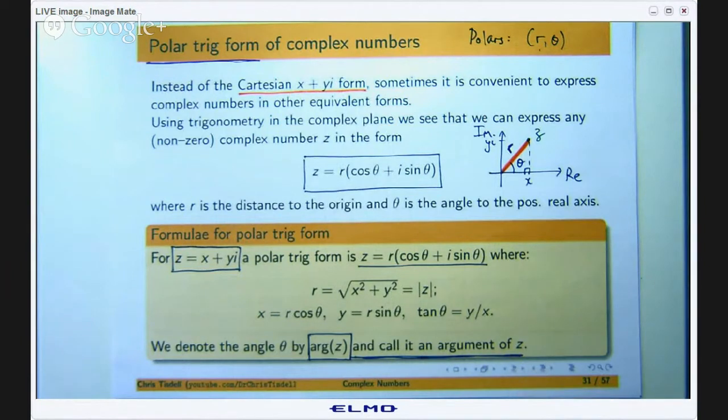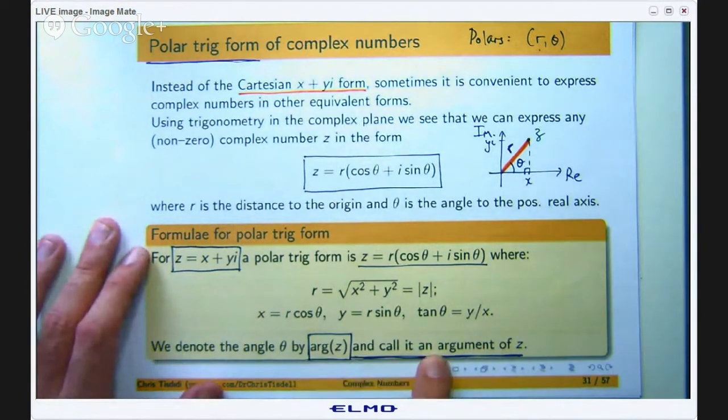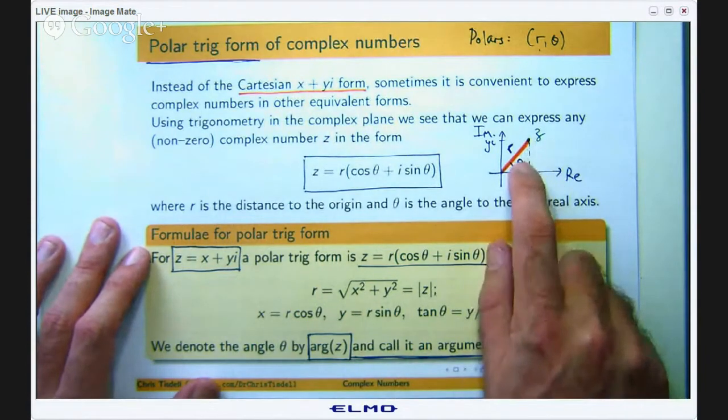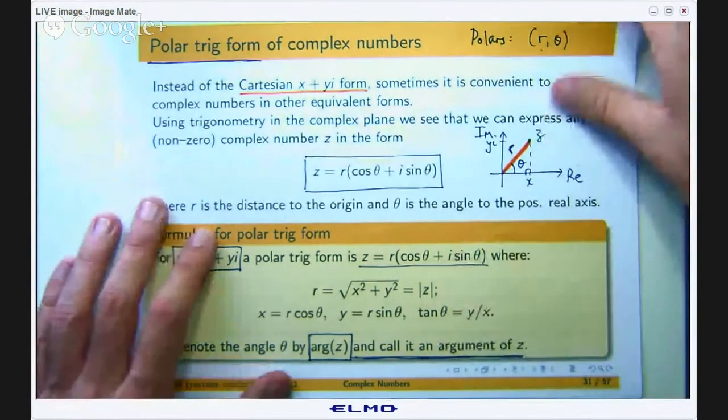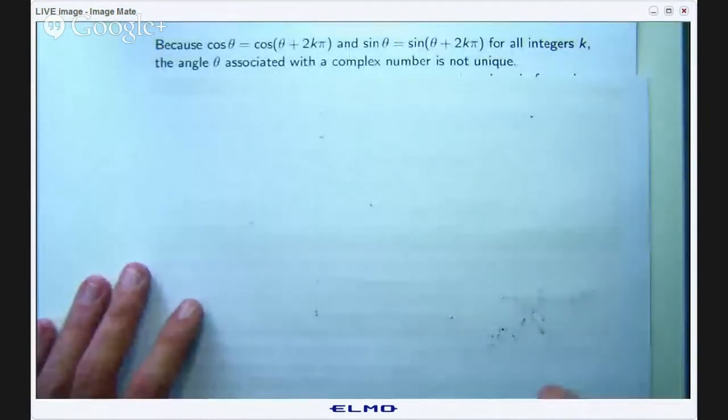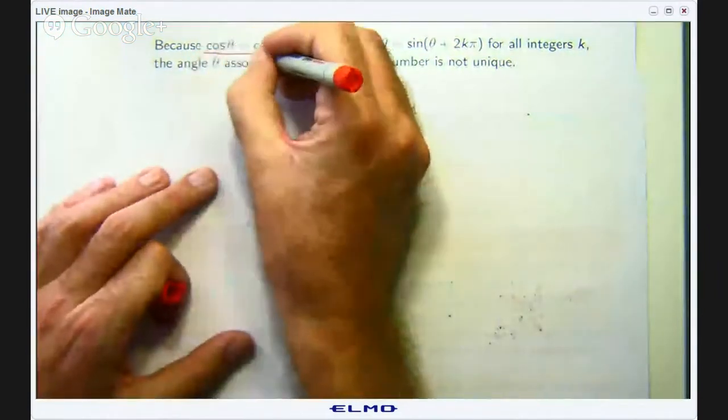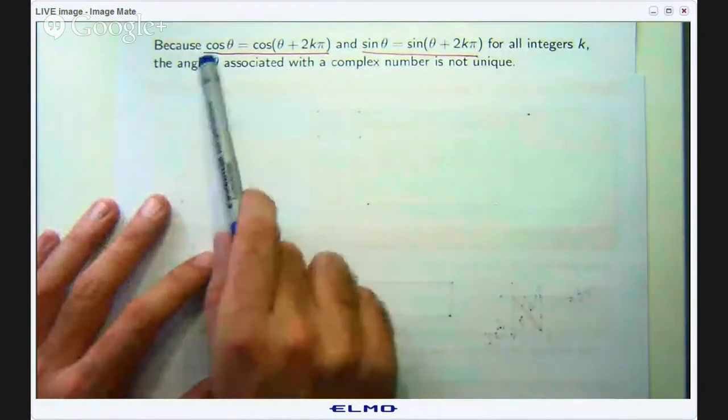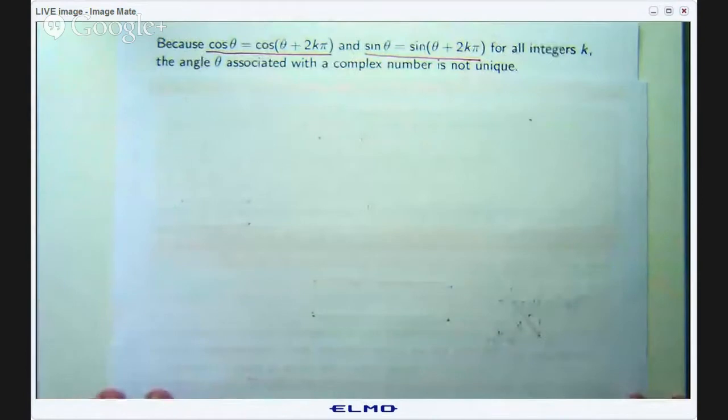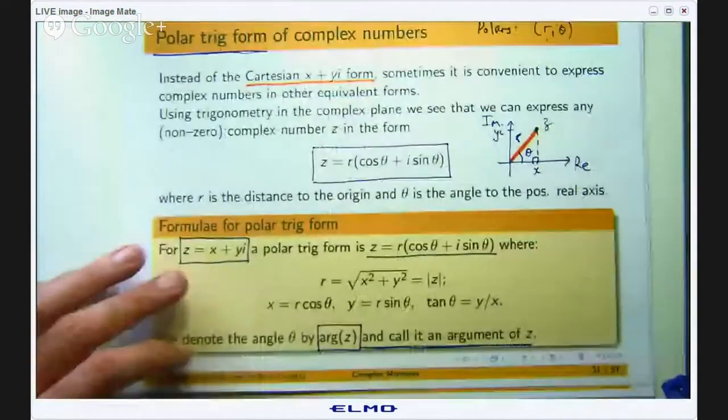Now a couple of things. You might say we call it an argument of z. Shouldn't it be the argument? Well not really because you can have lots of angles and in fact an infinite number of angles associated with each complex number which is a little bit strange so let me talk about that a bit more. The reason is that cosine and sine are periodic functions with period 2π. Cosine and sine are functions that repeat and they repeat themselves every 2π units. Because of this, the angle theta associated with the complex number is not unique.